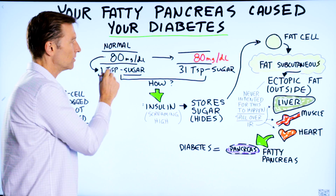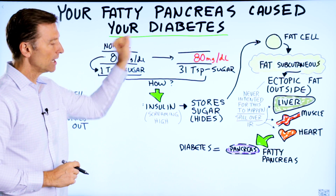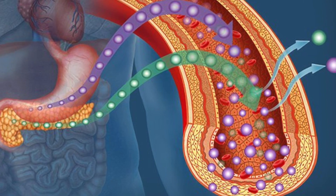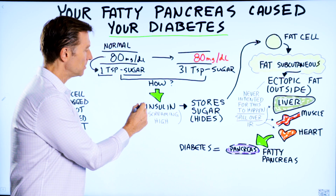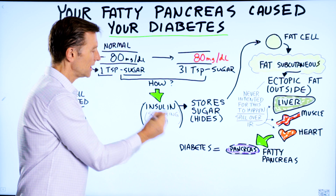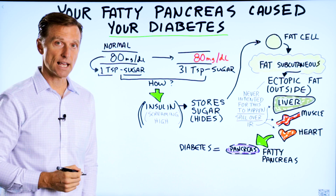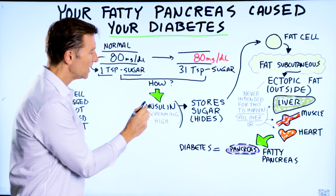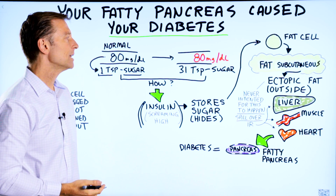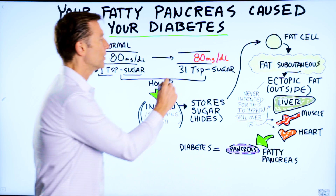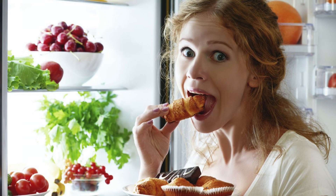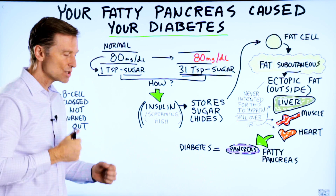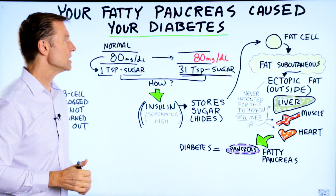Anything more than one teaspoon of sugar in the blood, insulin hides it in other places in the body. It's basically a storage hormone. What's ironic is that blood sugars are tested, but insulin is rarely tested. If they were to test the average American, they would find insulin screaming high — because an average person consumes 31 teaspoons of sugar per day, and in order to deal with all that excess, this hormone is just working overtime 24/7.